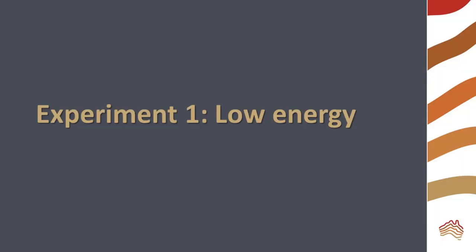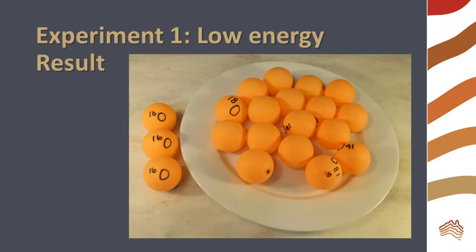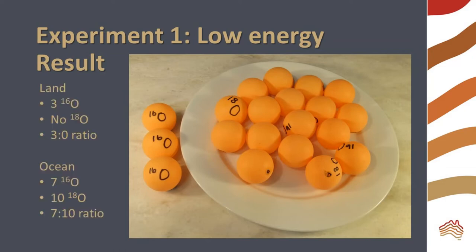For our first experiment, we will investigate what happens when there is a low amount of energy — this is a model of cold conditions. The blow dryer is applied briefly to our ocean model. In this low energy experiment, only three oxygens evaporated from our model ocean, and all three were O16. These three oxygens represent the isotopes that would be present on land. In this case, there would be a 3 to 0 ratio of O16 to O18 on land and a 7 to 10 ratio of O16 to O18 in the oceans.